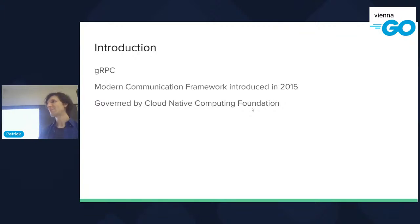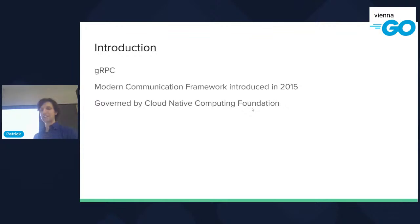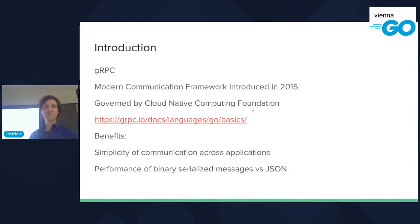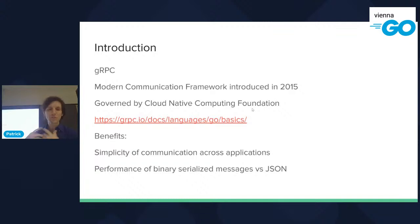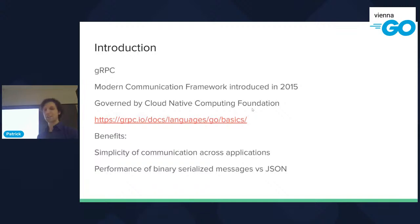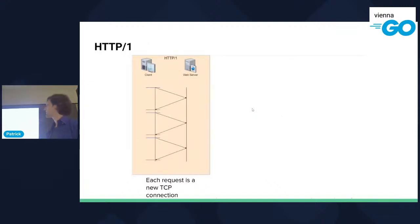gRPC — what does RPC stand for? Remote procedure calls. The 'g' in gRPC stands for gRPC itself — it's a nested acronym. It's a modern communication foundation from 2015, governed by the Cloud Native Computing Foundation. The benefits it promises are simplicity of communication across applications and performance of binary serialized messages versus JSON. Usually the go-to serialization method for web applications is JSON, which is human-readable, but we'll look at what's gained by trading that.